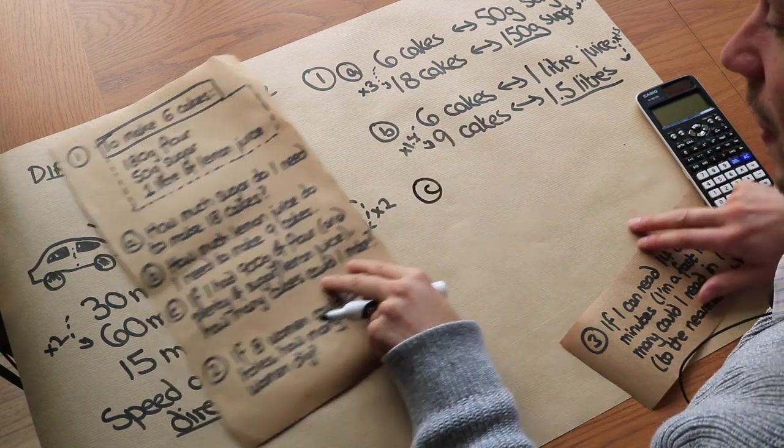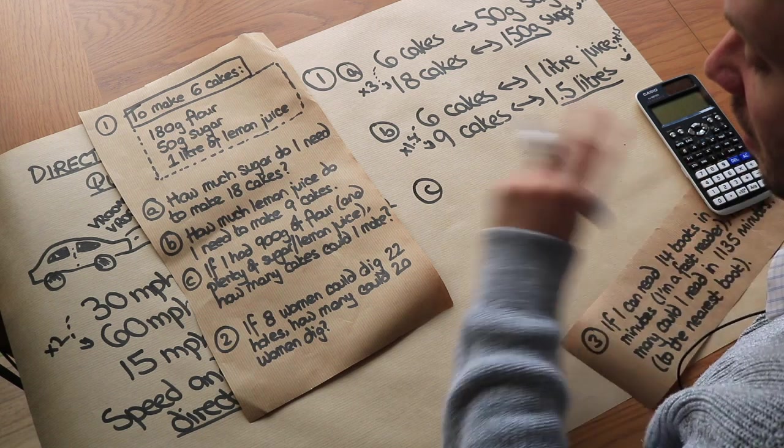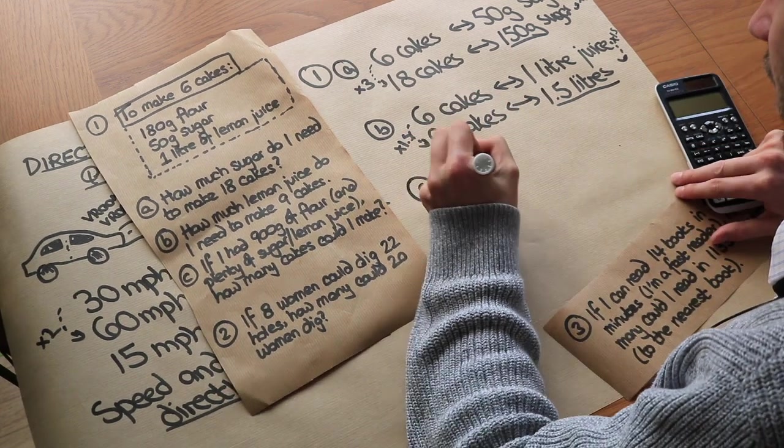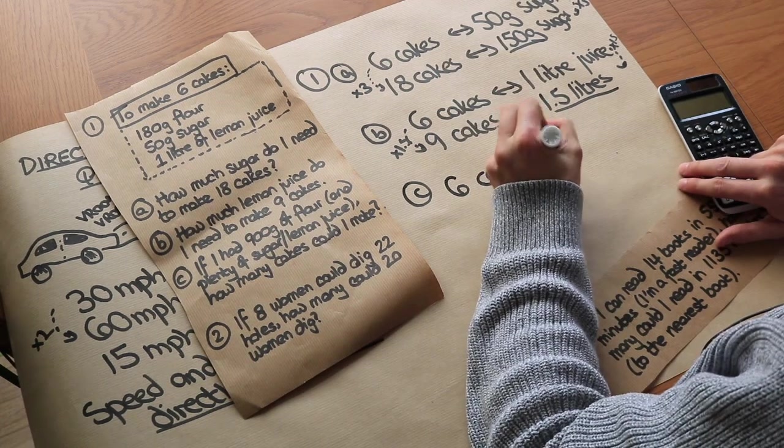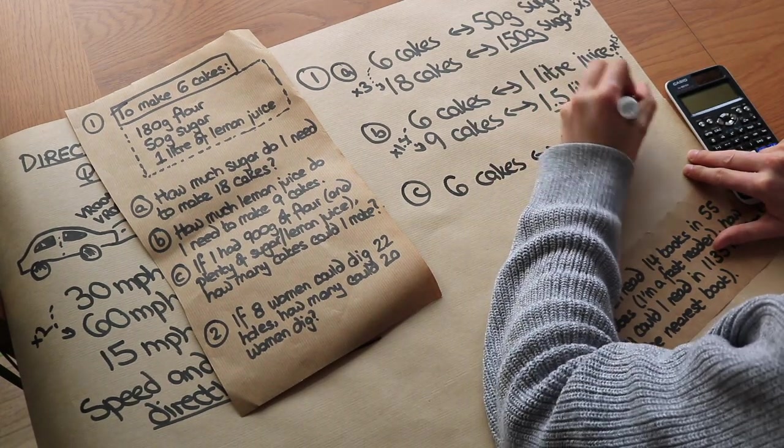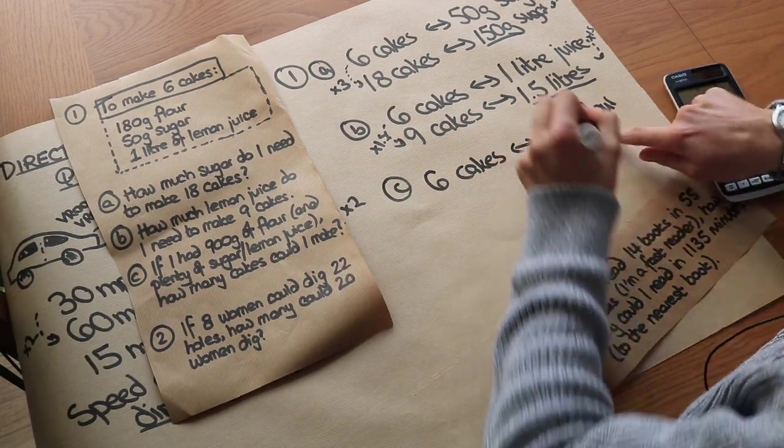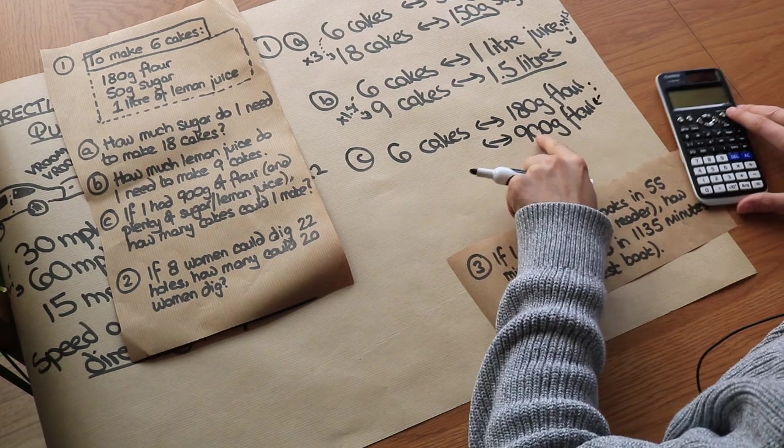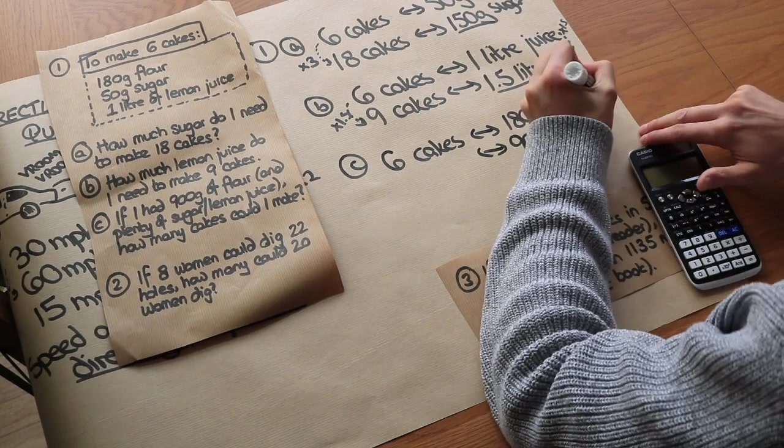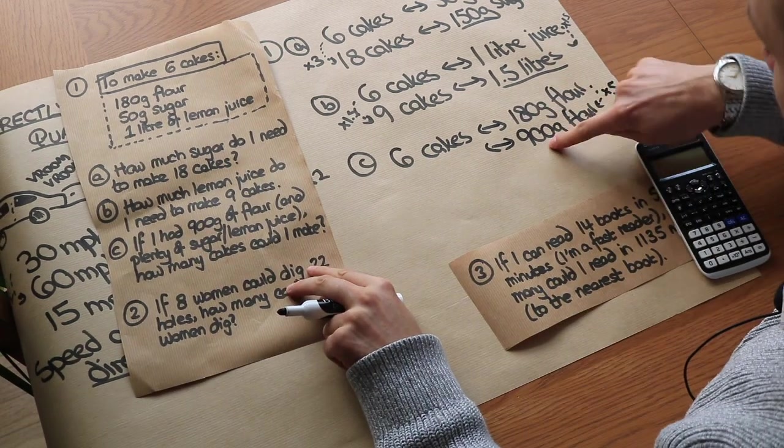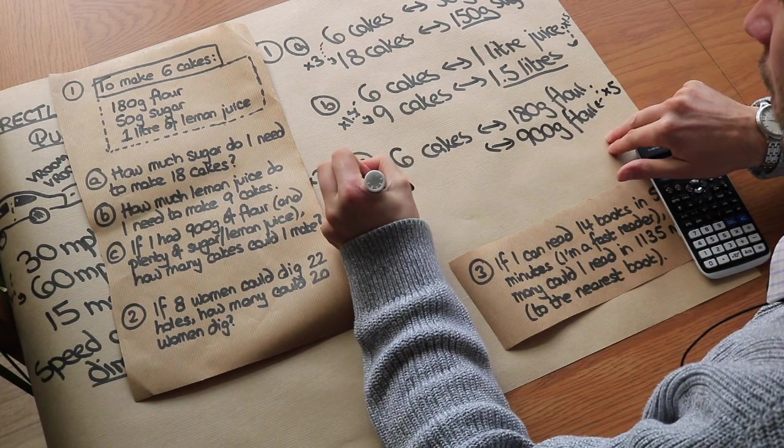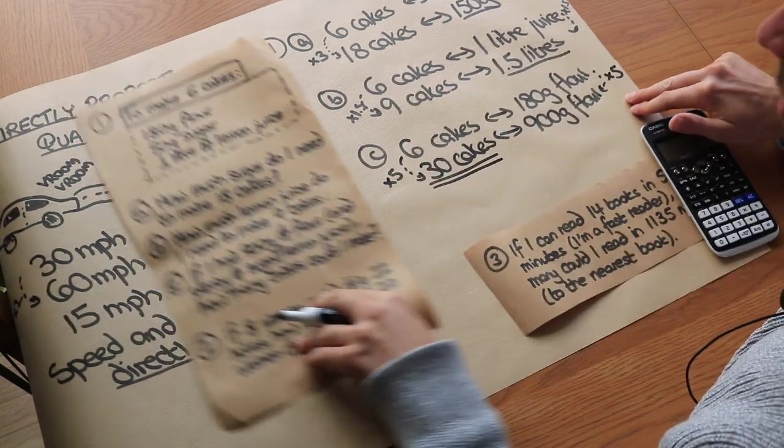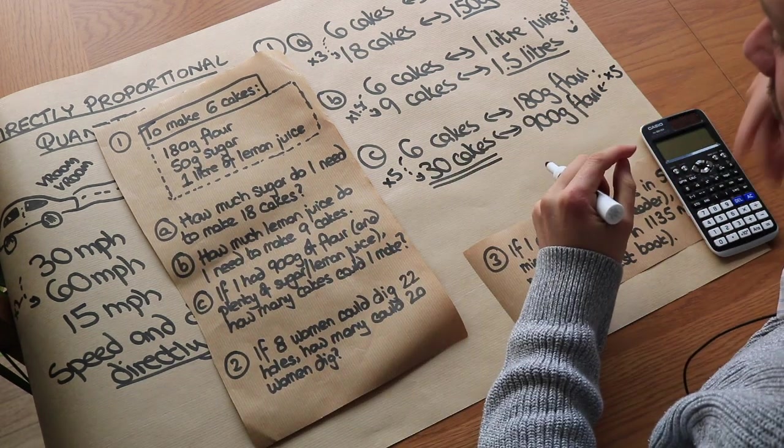What about part c: if I had 900 grams of flour and plenty of the other ingredients - let's not worry about the other ingredients - how many cakes could I make? Now I know that 6 cakes requires 180 grams of flour, and now I'm using 900 grams of flour. I want to work out how many cakes I can make. Well, again we just work out the scale factor, so we just do 900 divided by 180. And if you do that division, you'll see that it's five times as big. So we've got five times as much flour, so that means we can make five times as many cakes. So six times five would be 30 cakes, and that would be the answer.